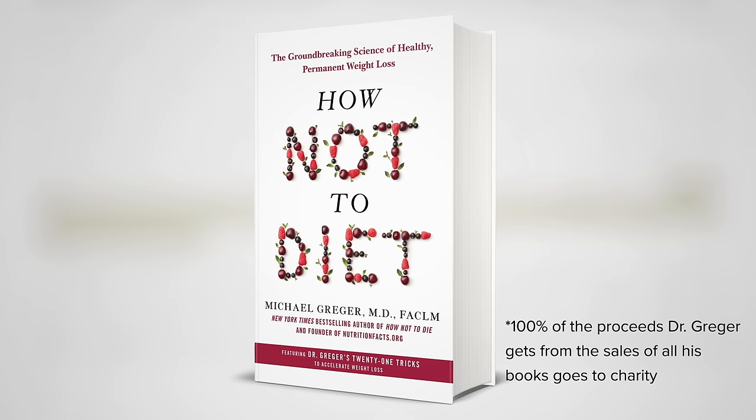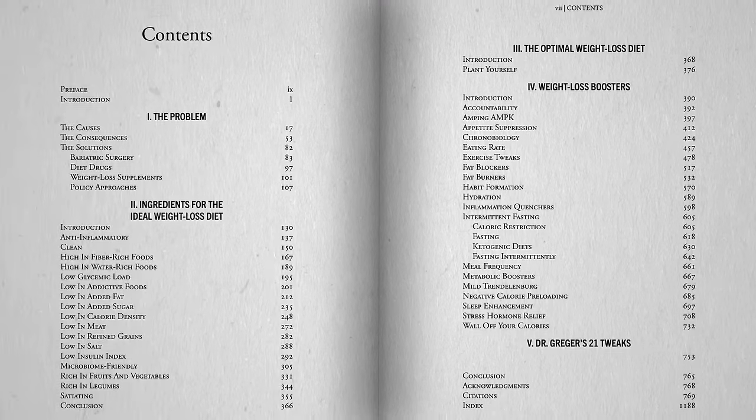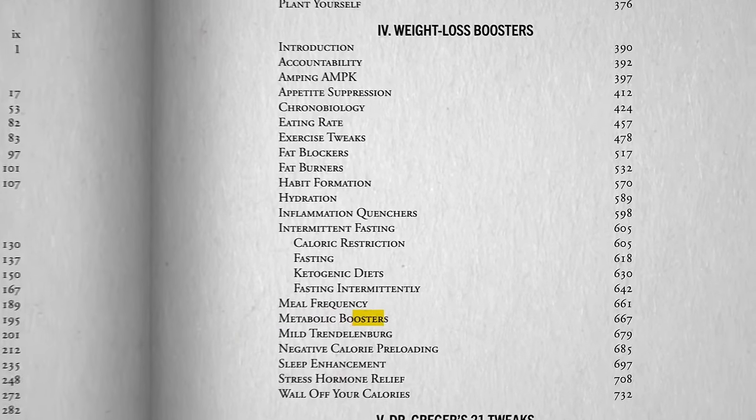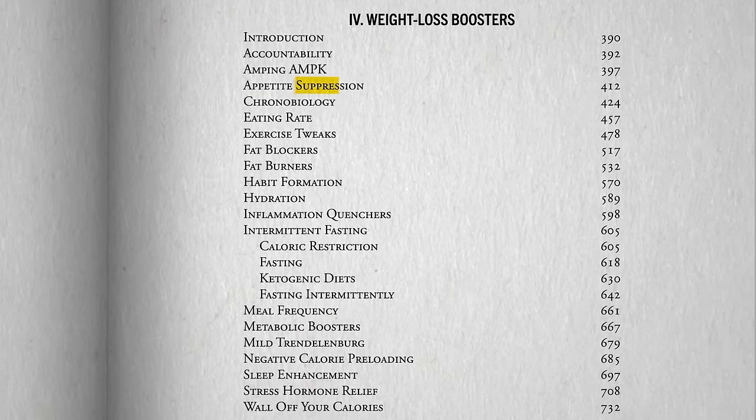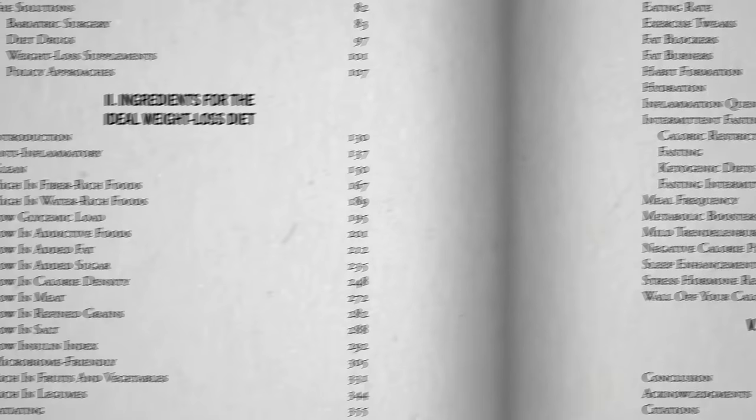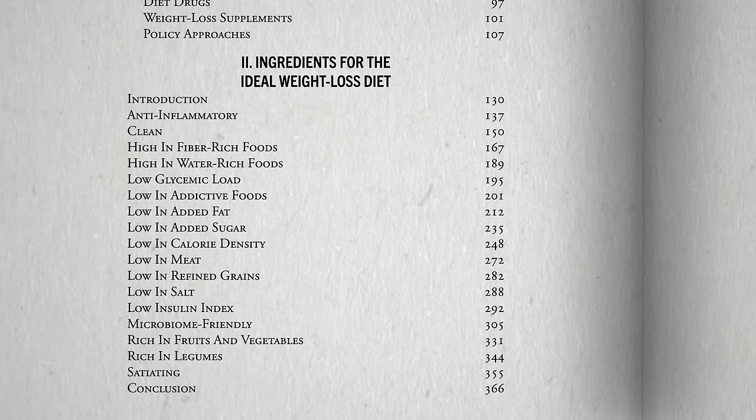That's why I wrote How Not to Diet. There are foods that can counter the slowing of our metabolism and suppress our appetite. Ways of eating to counter the behavioral adaptation, and even eat more food, yet still lose weight.